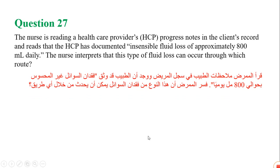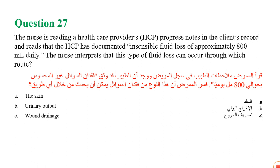Question number 27: The nurse is reading a healthcare provider's progress note and reads that the healthcare provider has documented insensible fluid loss of approximately 800 mL per day. The nurse interprets that this type of fluid loss can occur through which route: the skin, urinary output, wound drainage, or the gastrointestinal tract?